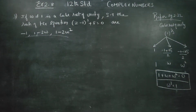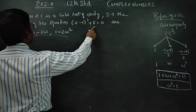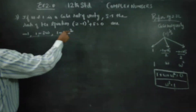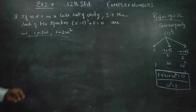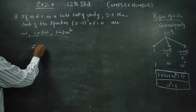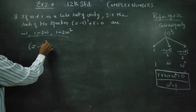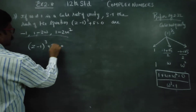Dear 12th standard students, we are asked to solve this cubic equation in terms of omega. The answers will be like this. First of all, we will start the sum. Z minus 1 whole cube plus 8 is equal to 0.